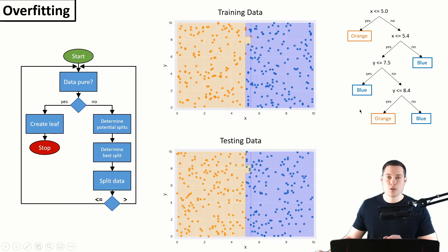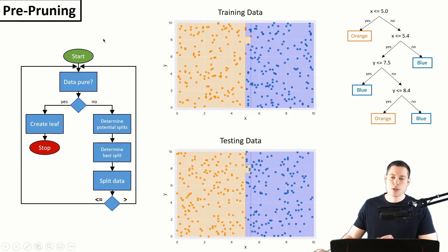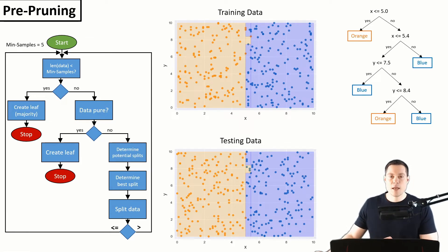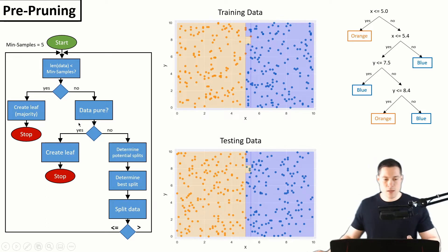The resulting deeper decision tree now misclassifies three blue dots as orange when applied to testing data, so it has overfit the training data. To get around this, we need to prune the tree. There are two different types of pruning. The first is called pre-pruning, where we simply make sure the tree doesn't get too deep in the first place. One approach is by specifying a minimum number of samples that need to be present — if there are fewer data points than this minimum, we create a leaf even though the data might not be pure, assigning the most frequent class.